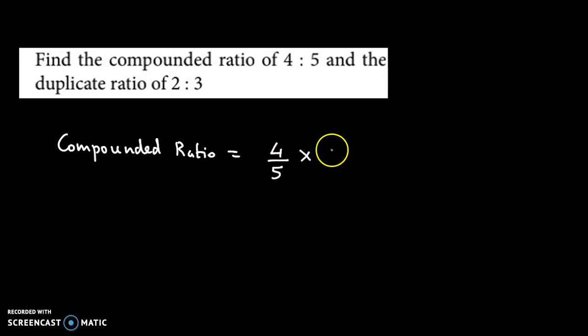The duplicate ratio of 2:3 is 2²:3². If you have a ratio a:b, its duplicate ratio is a²:b². So let's proceed.